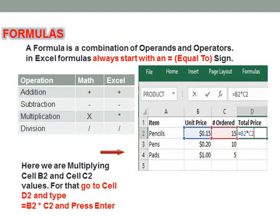The headings are item, unit price, number ordered, and total price. To calculate the total price of pencils, in B2 you find the amount to be 0.15 dollars and the ordered number is 15. To calculate the total price, use equal to B2, the unit price, asterisk for multiplication, then C2 for the ordered number. Click on cell C2 and press enter key.